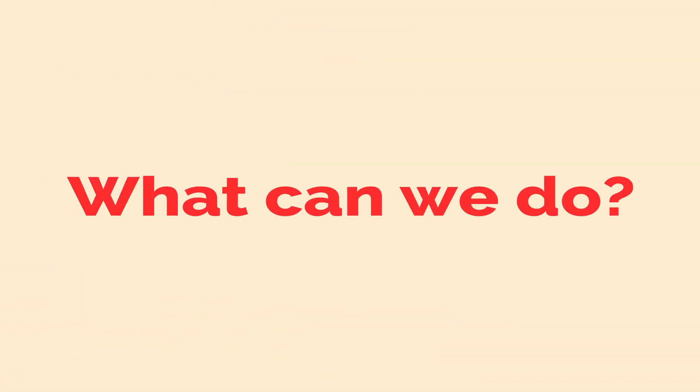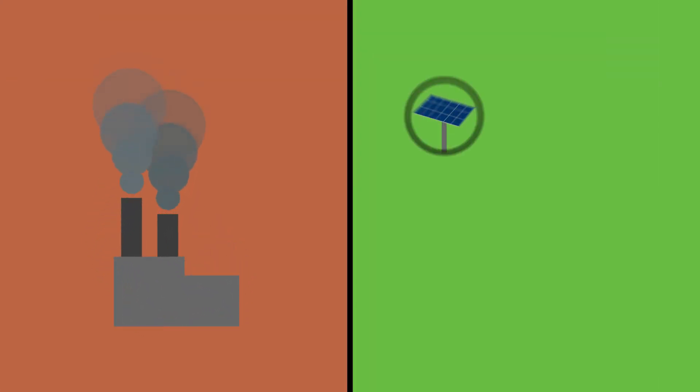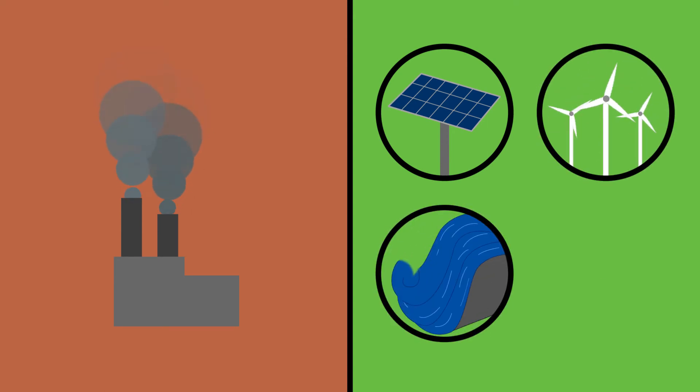So what can we do to limit the effects of climate change? We can transition from using fossil fuels to more renewable sources like solar, wind, hydro, and nuclear power.